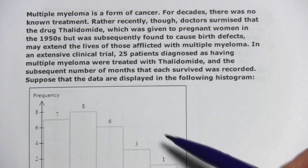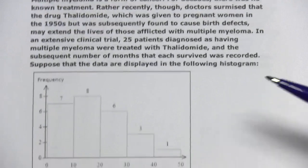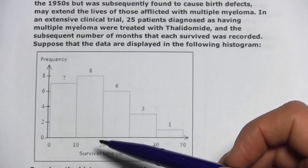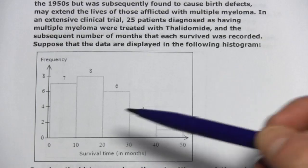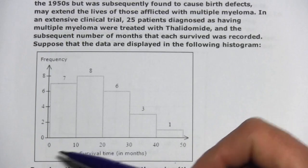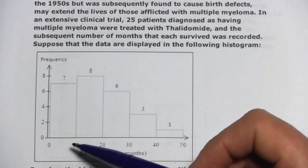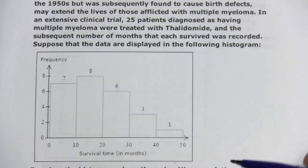What we have here is another histogram, and what this shows is the survival rate of people with a certain type of cancer who had taken a certain medication. Those who survived from 0 to 10 months, there were 7 of them, 10 to 20 months, 8 of them, etc.